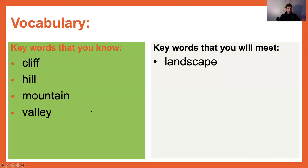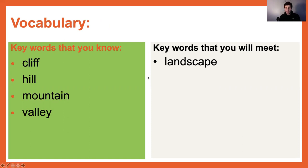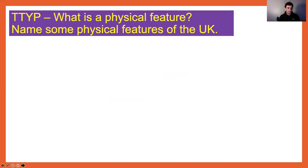Some vocab — there shouldn't really be any vocab that we're coming across today that is going to surprise us or be new to us, guys. We've got cliff, hill, mountain, valley — we'll go through all those in a second. And the real keyword is landscape: the physical features that make up the United Kingdom in particular.